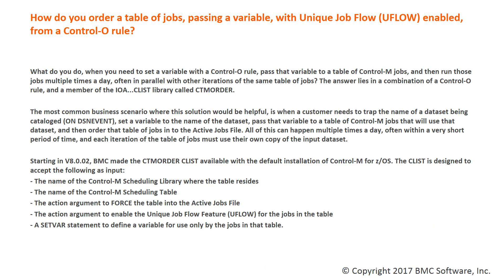What do you do when you need to set a variable with a Control-O rule, pass that variable to a table of Control-M jobs, and then run those jobs multiple times a day, often in parallel with other iterations of the same table of jobs? The answer lies in a combination of a Control-O rule and a member of the IOA CLIST library called CTM Order.